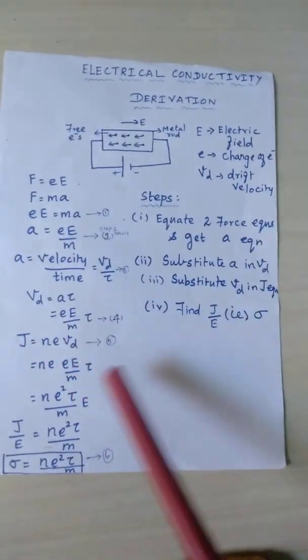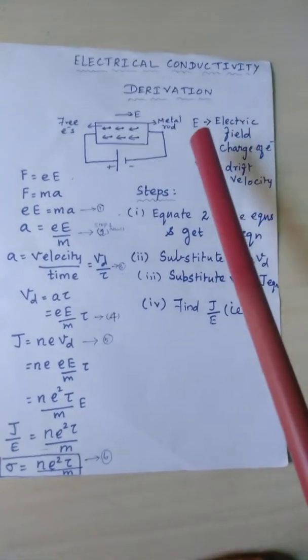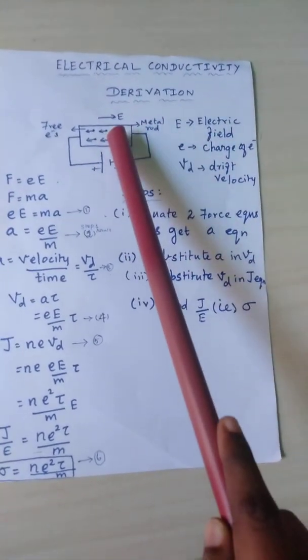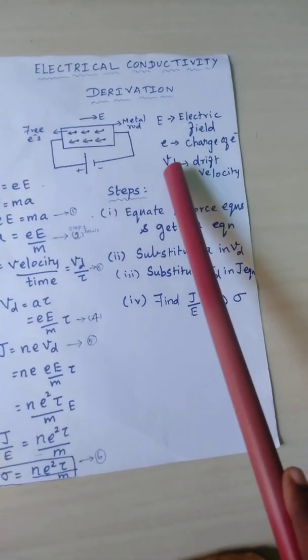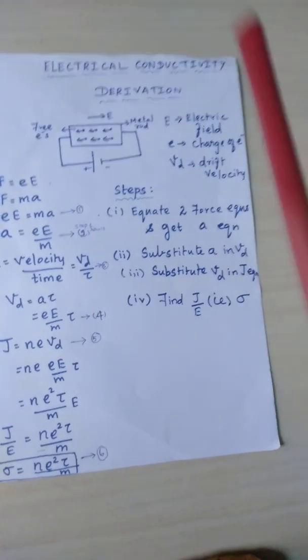Now we're going to see the derivation part. Here, capital E is the electrical field, small e is the charge, and Vd is the drift velocity of the free electron.